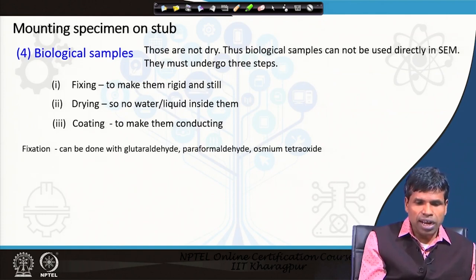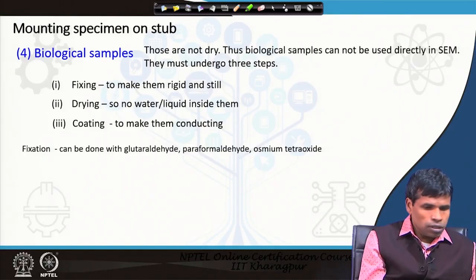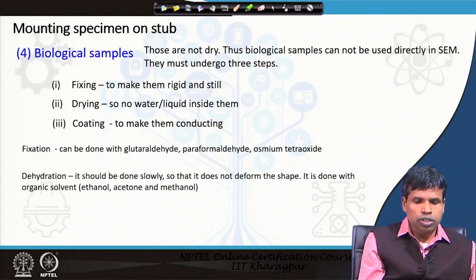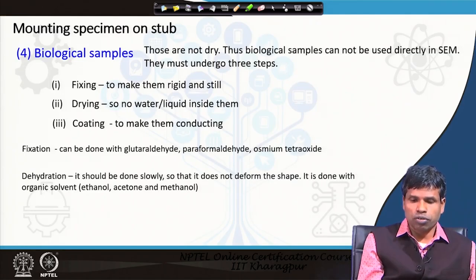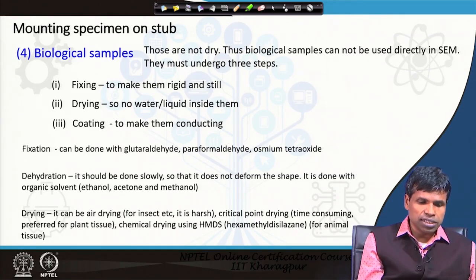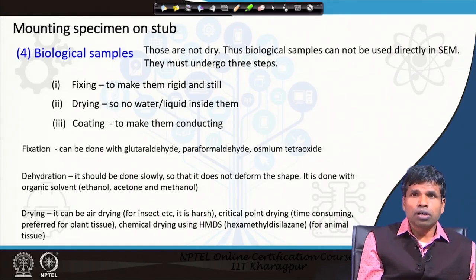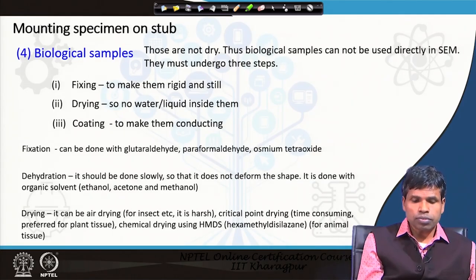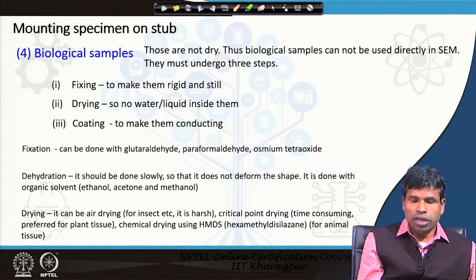The second step is drying, or dehydration, which should be done slowly so as not to deform the shape. It is done with organic solvents such as ethanol, acetone, or methanol. Final drying can be done by air drying for insects, by critical point drying (CPD) which is more time-consuming and is used for plant tissues, or by chemical drying using HMDS (hexamethyldisilazane) for animal tissues.